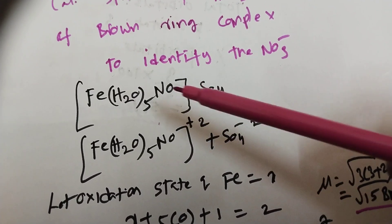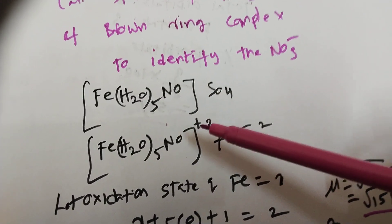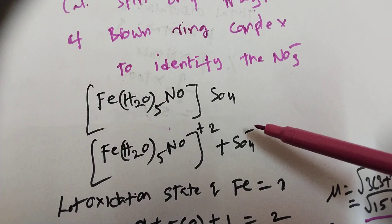You know sulfate charge is minus 2, so this must be plus 2. So I am going to write this is plus 2, this is SO4 minus 2.